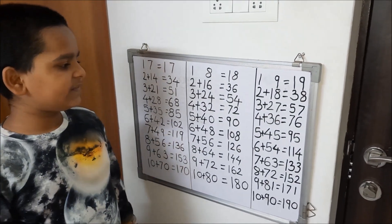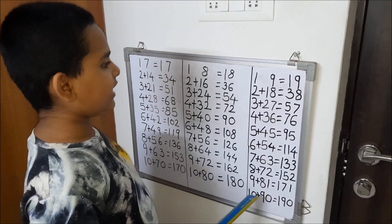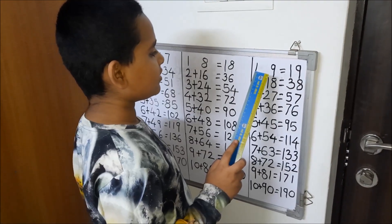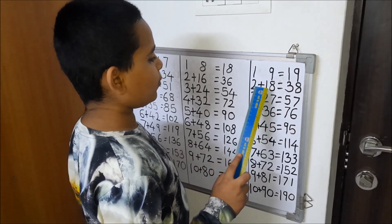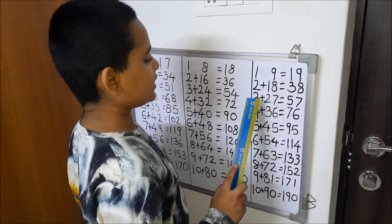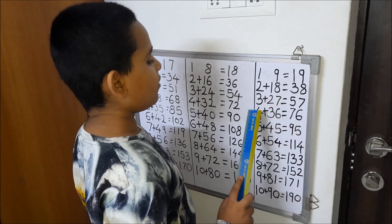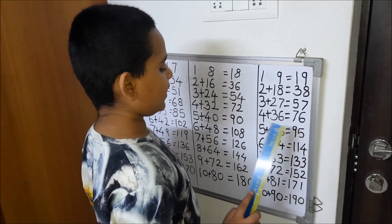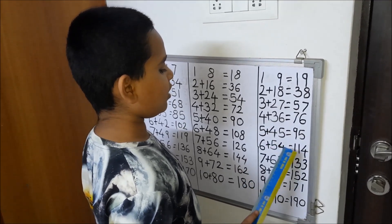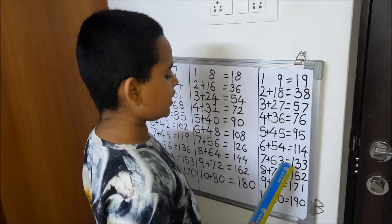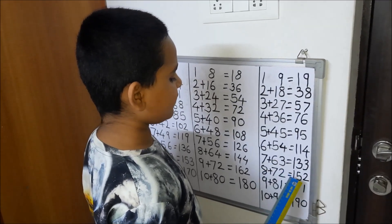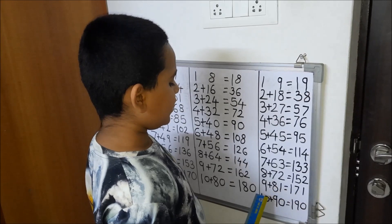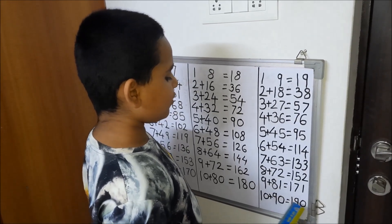For the 19 times table, first we have to write 1 to 10 numbers in the left side, and then we have to write the 9 times table in the right side. 19×1 is equal to 19. 2 plus 1 is equal to 3, write 8. 3 plus 2 is equal to 5, write 7. 4 plus 3 is equal to 7, write 6. 5 plus 4 is equal to 9, write 5. 6 plus 5 is equal to 11, write 4. 7 plus 6 is equal to 13, write 3. 8 plus 7 is equal to 15, write 2. 9 plus 8 is equal to 17, write 1. 10 plus 9 is equal to 19, write 0.